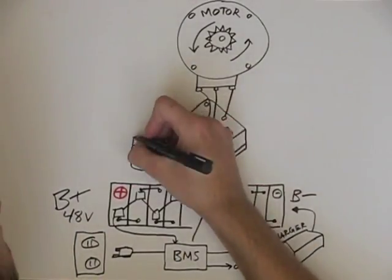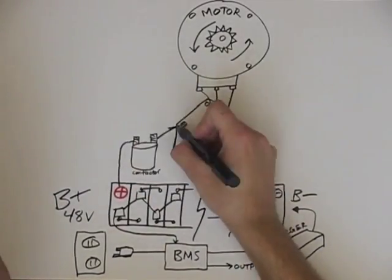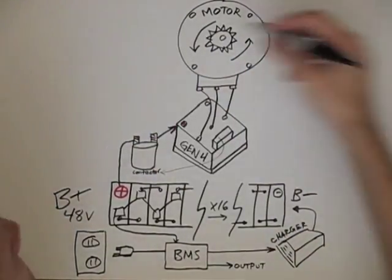The battery pack connects to the controller but first the pack positive goes through a contactor or solenoid which is pretty much a large switch.